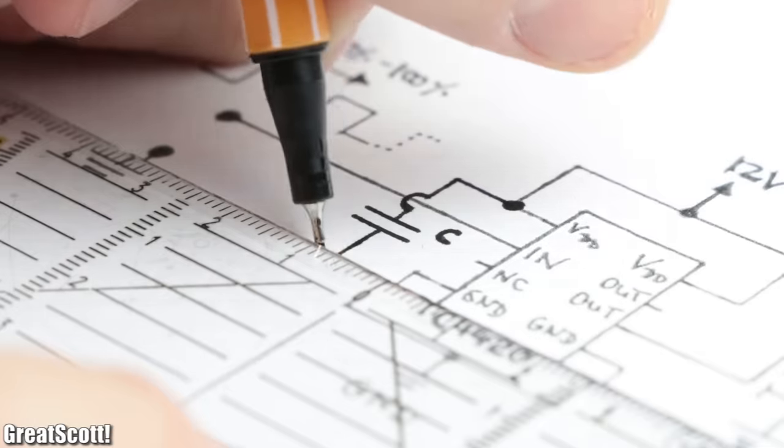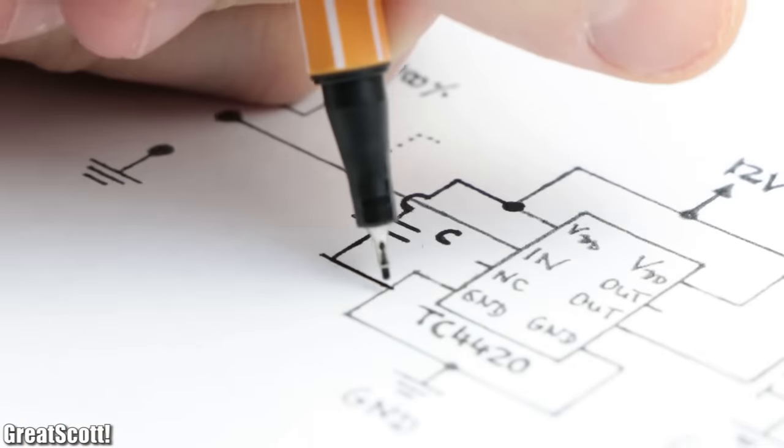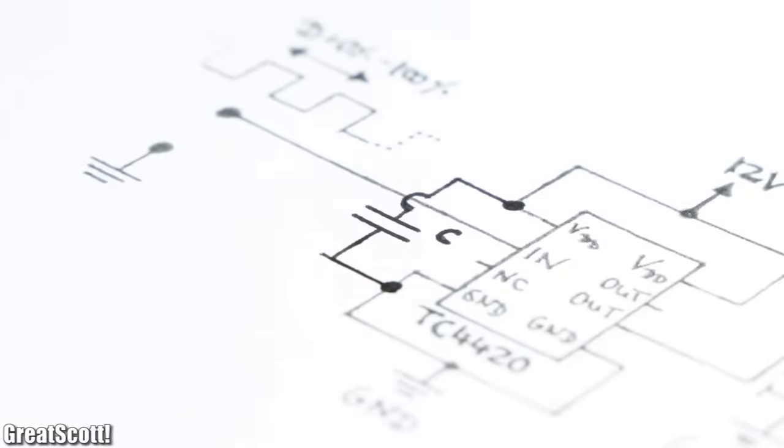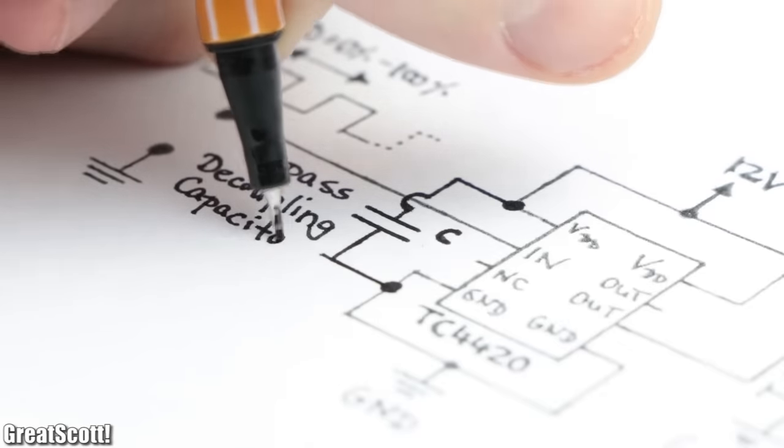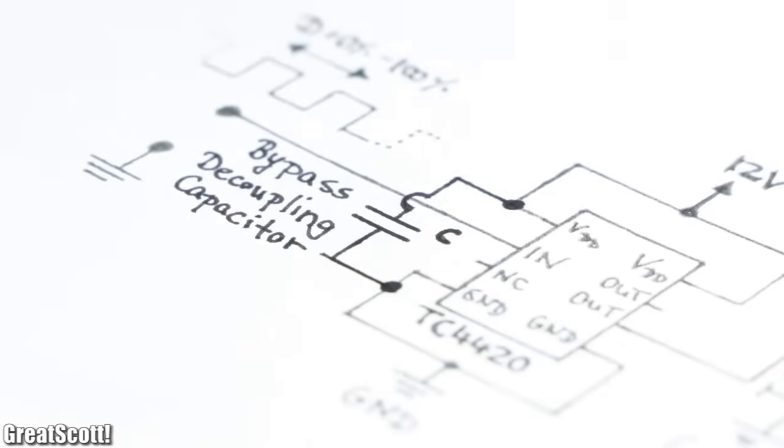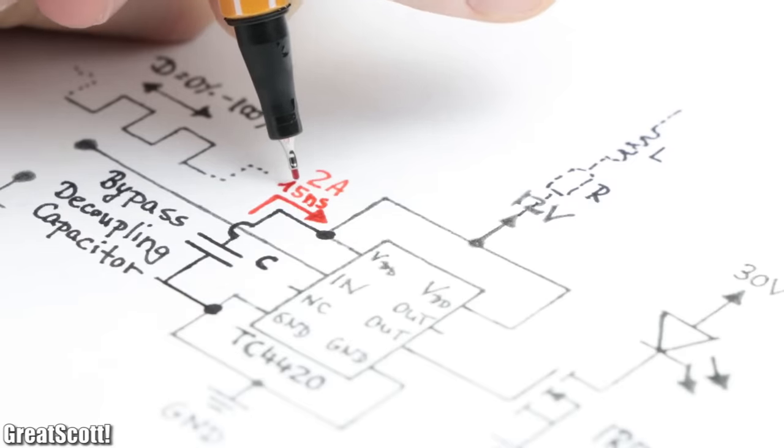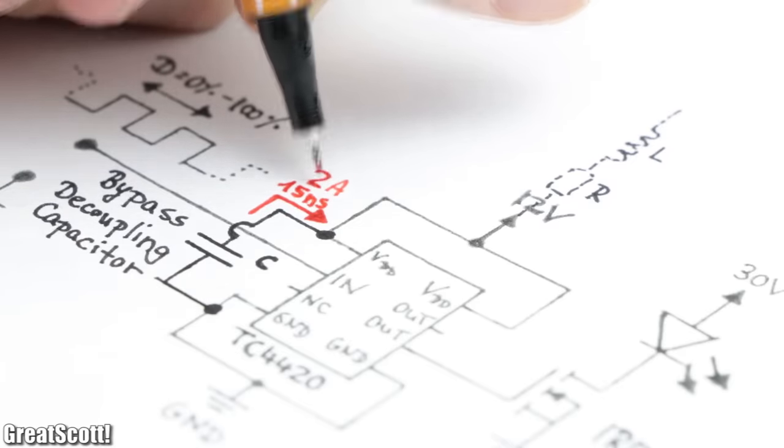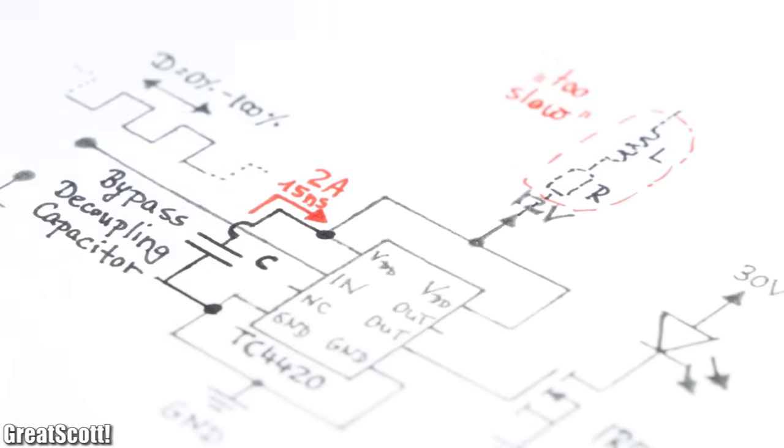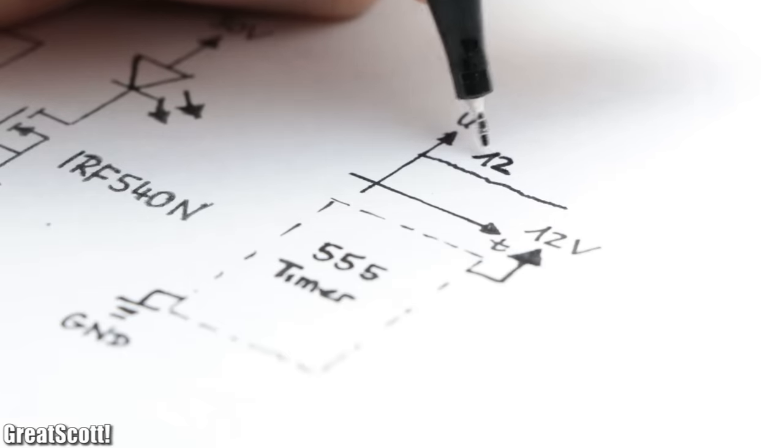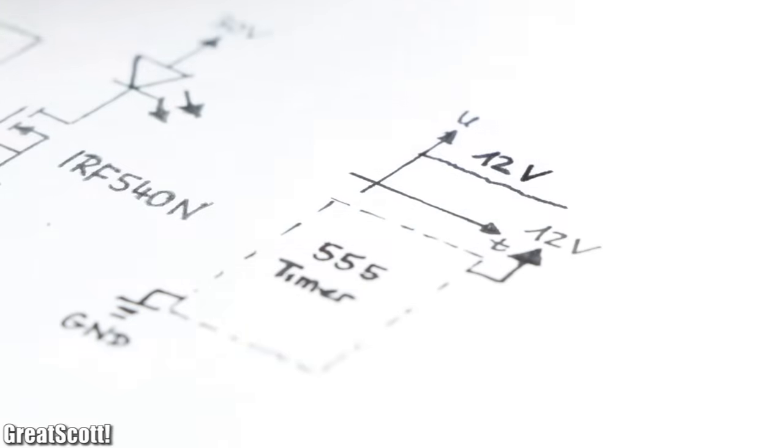To solve that, we can add a capacitor in parallel to the supply voltage pin, which is then often referred to as a bypass or decoupling capacitor. Its job is to basically provide the high current surge for the IC, which the mains power supply cannot offer because it is too slow, and thus it also suppresses noise for other ICs in the circuit.